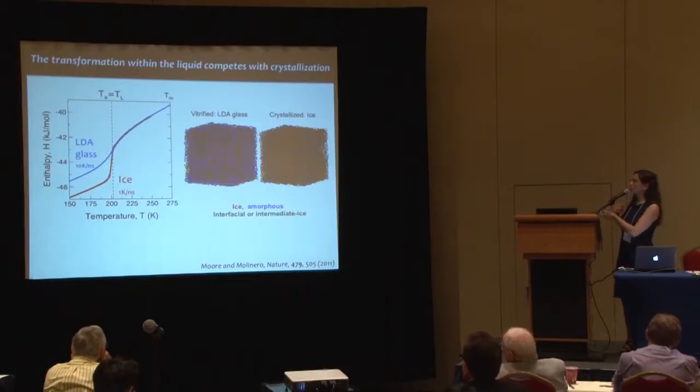What is remarkable is not that it crystallizes, but that it decided to crystallize when it reaches the same point at which the change in density, the change in structure, and the heat capacity peak all occur. The crystallization temperature Tx is exactly the same as the point at which the liquid is changing the most — density, structure, and heat capacity peak. This means a single measure really controls both the structure and thermodynamics of the liquid state and the crystallization of water.